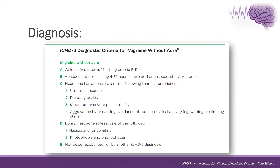According to the International Headache Society diagnostic criteria, migraine without aura requires at least five attacks fulfilling the criteria. The headache should last between 4 to 72 hours and should have at least two of the following four characteristics: unilateral in location, pulsatile in quality, moderate or severe pain intensity, and aggravated by or causing avoidance of routine physical activity. During the headache, at least one of the following: nausea and/or vomiting, photophobia and phonophobia, and no other explanation for the headache.